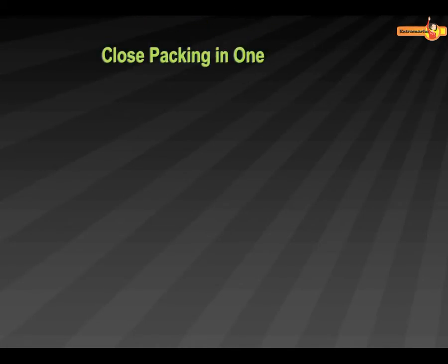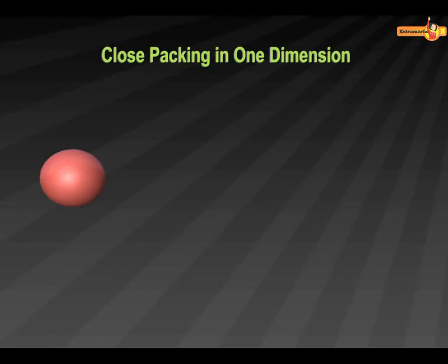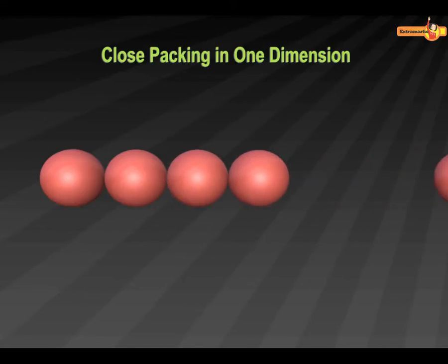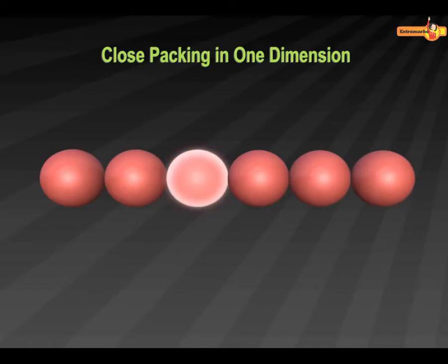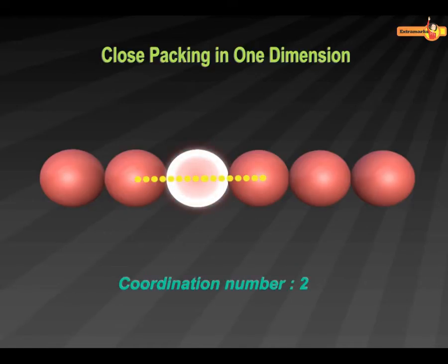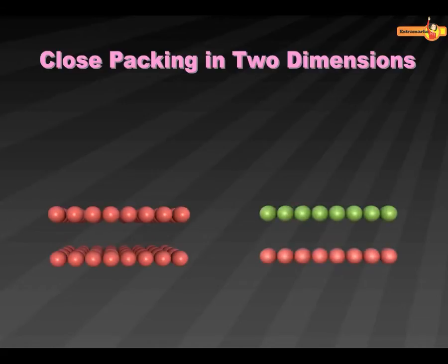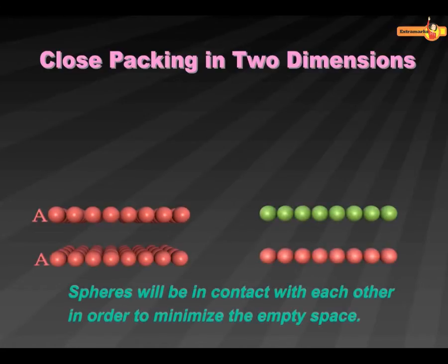Close packing in one dimension: spheres in this type of packing can be arranged only in one way, that is by touching each other in a row. Since each sphere is touching two spheres at a time, the coordination number of this arrangement is two. Close packing in two dimensions: in this type of packing, rows are stacked over each other.